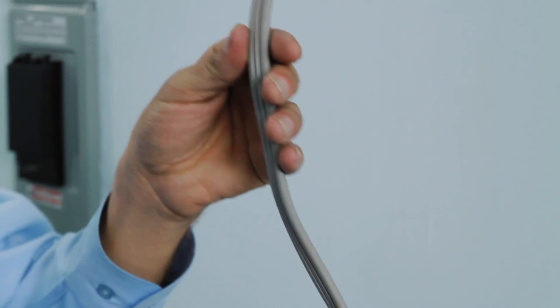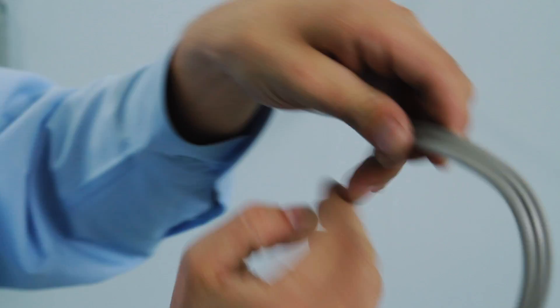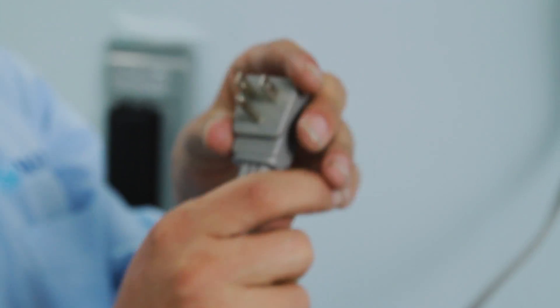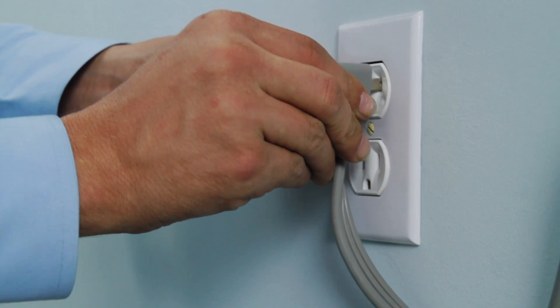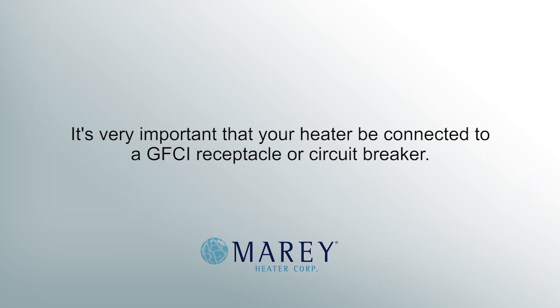Turn on your water and check again for leaks. Plug your water heater into a grounded GFCI receptacle at least 3.5 feet away. It is very important that your heater be connected to a GFCI receptacle or circuit breaker.